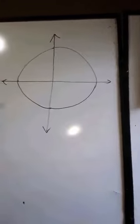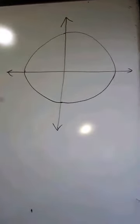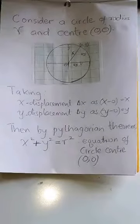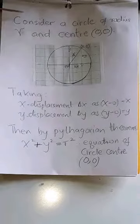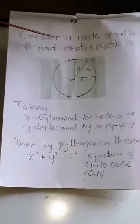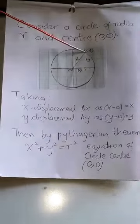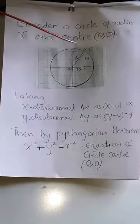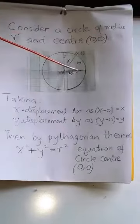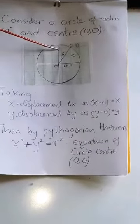What is the equation of a circle? Consider a circle of radius r at center O passing through a point (x, y). Point (x, y) means that on the x-axis this value is x, and on the y-axis this value is y.